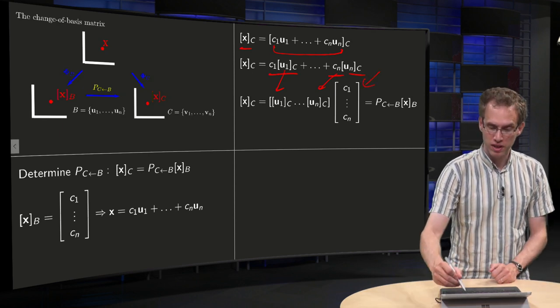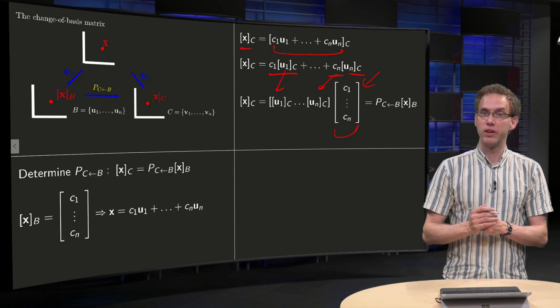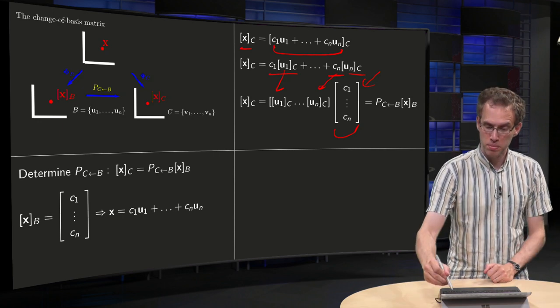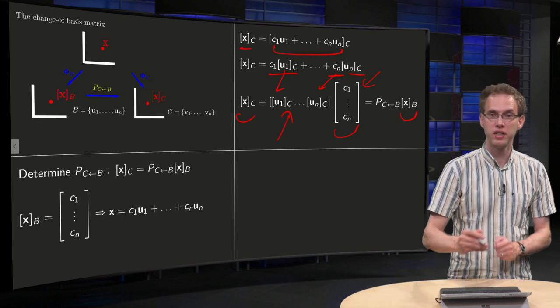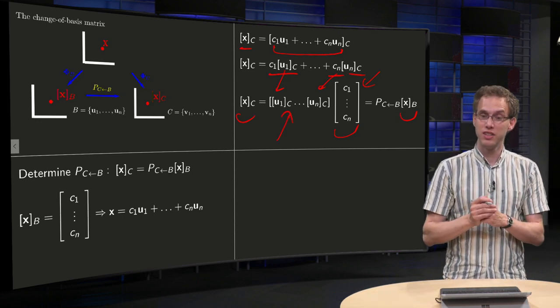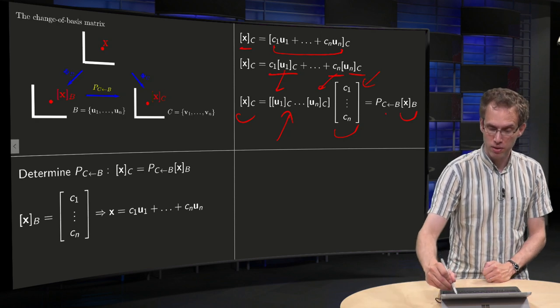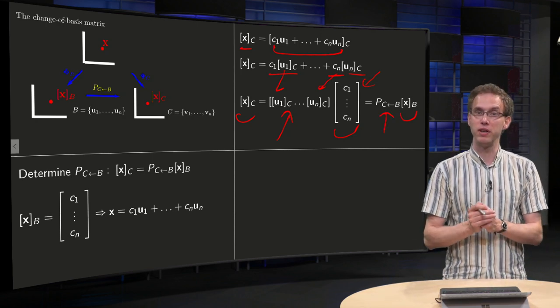But this vector here on the right is just our vector x_B, and over here we have x_C, and over here we have some matrix, but that is exactly the desired matrix. That is our change of coordinate matrix P from B to C.